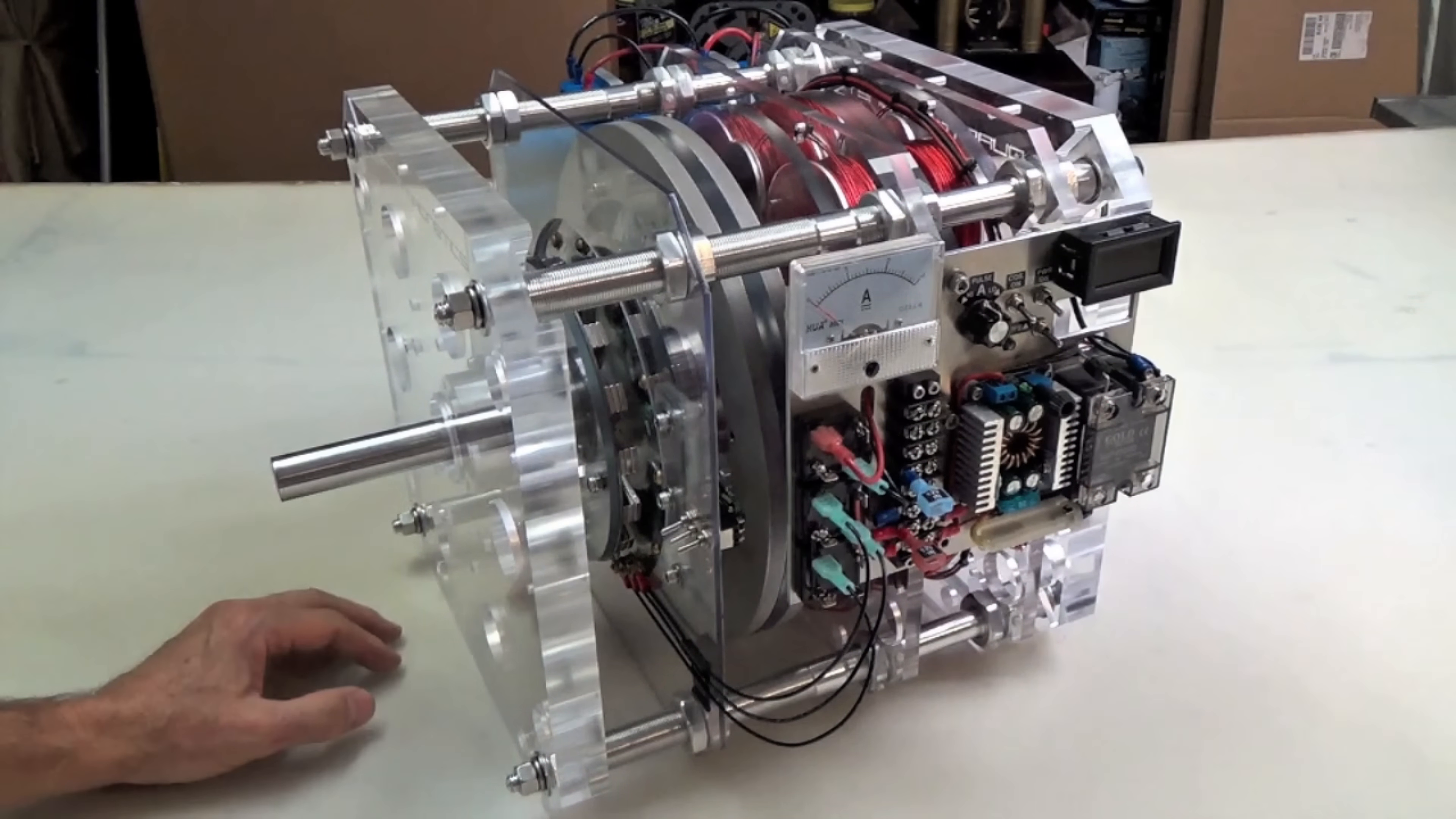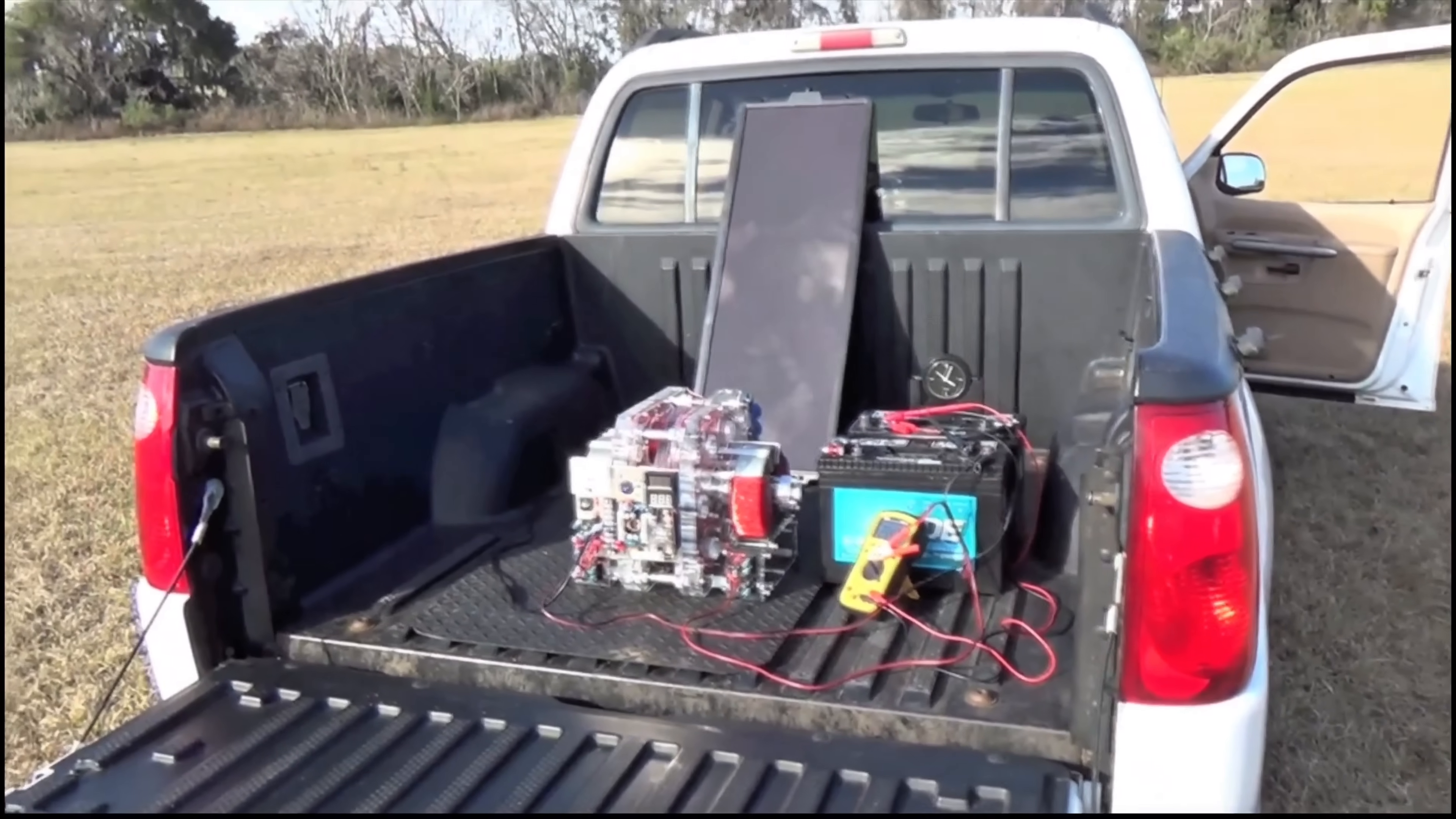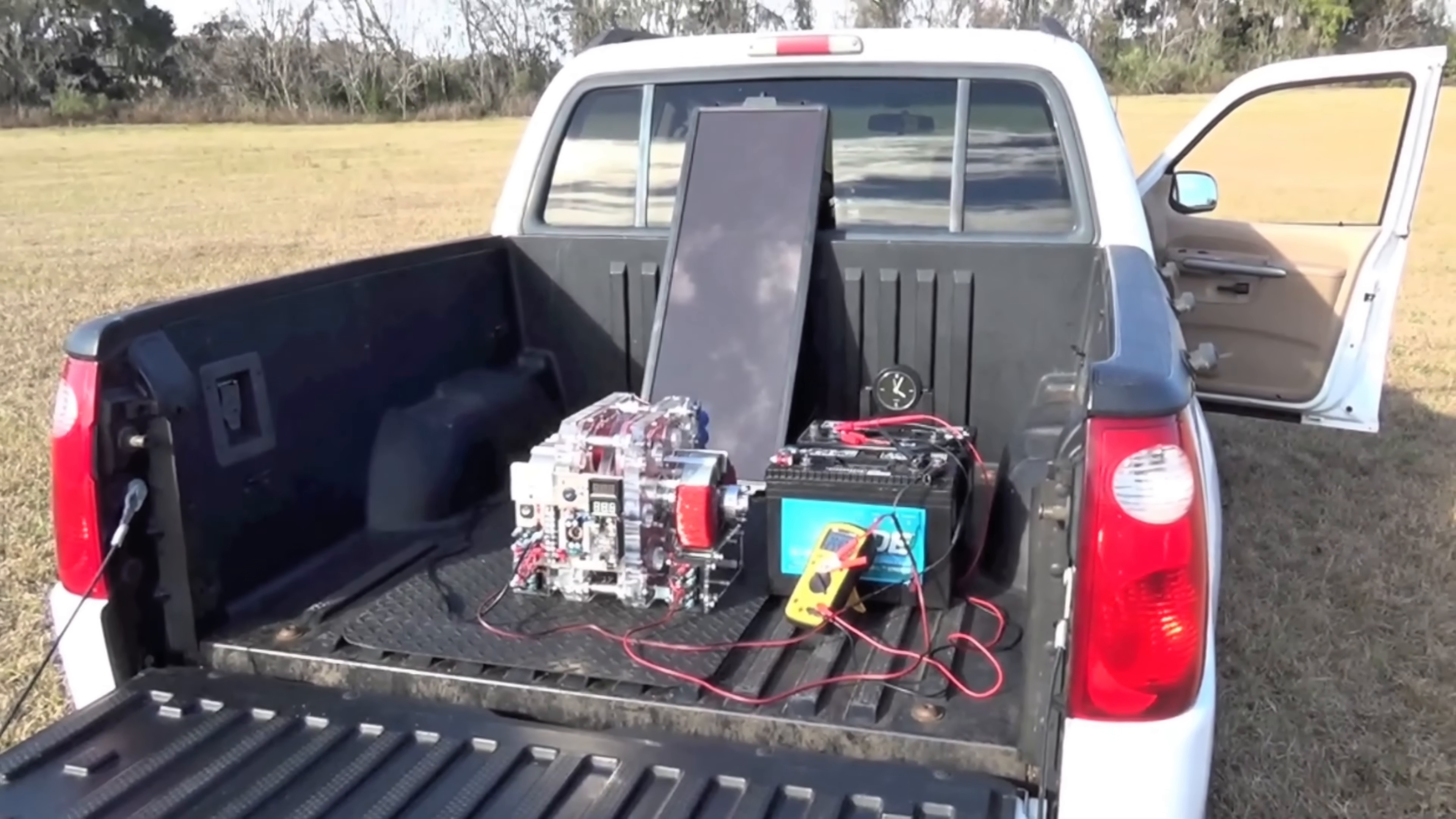In a quiet laboratory, engineers are tinkering with a deceptively simple machine: a heavy metal flywheel rigidly mounted on a sturdy frame. Yet the inventors have given it a name that hints at big ambitions, the gyroscopic inertia pulse motor generator, and claim it can produce what they call unlimited or free energy.